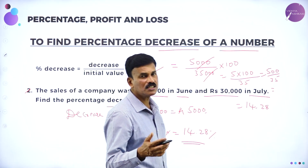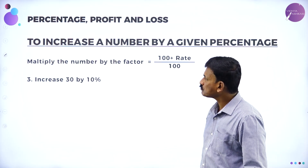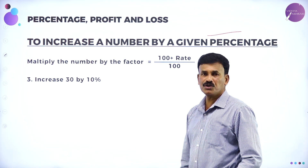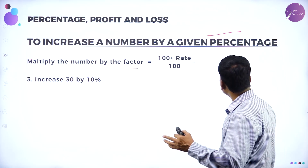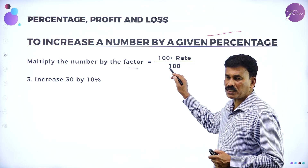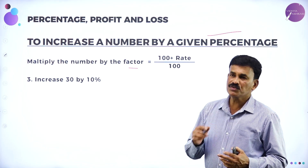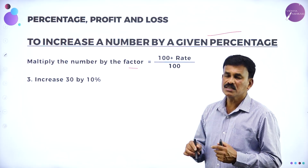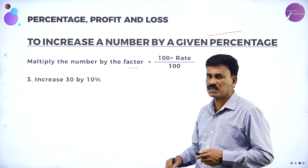The first concept is percentage of increase and the second is percentage of decrease. Now, to increase a number by a given percentage, just multiply by the factor. The factor we are going to multiply is 100 plus rate divided by 100. So if you want to find the increased value of a number x, multiply x by 100 plus rate divided by 100.